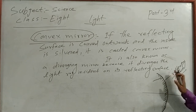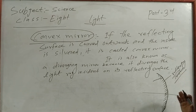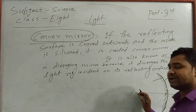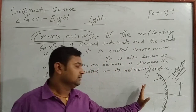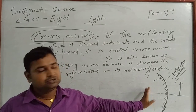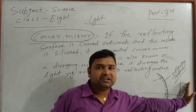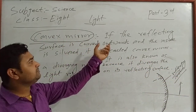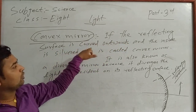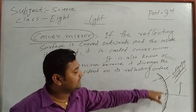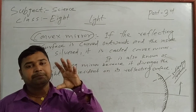So where should the object be kept in the case of a convex mirror? The object should be kept outside — in this position — not inside. When you keep the object inside, that side is polished so the image cannot be formed. You have to keep the object outside of the convex mirror. So a convex mirror is one in which the reflecting surface is curved outside and the inside is silver coated.